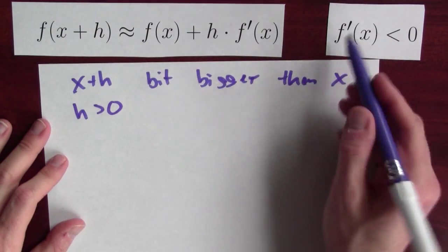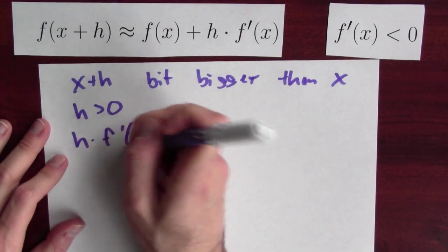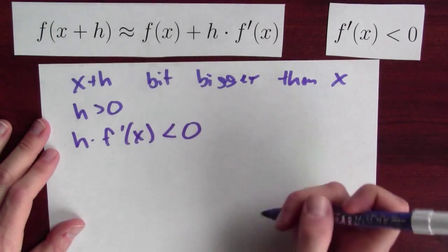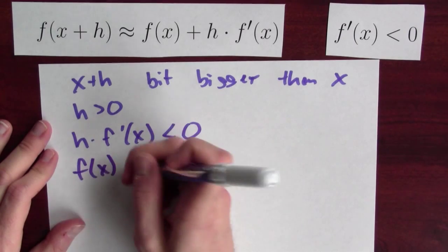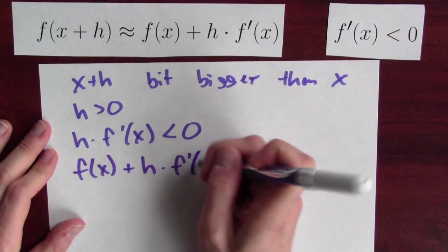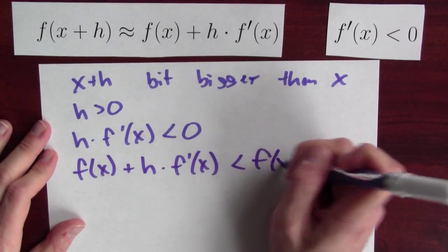But now I've got a positive number times a negative number. h times the derivative of f is negative. Now, if I add f of x to both sides, I've got that f of x plus h times f prime of x is less than f of x.